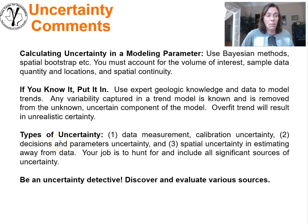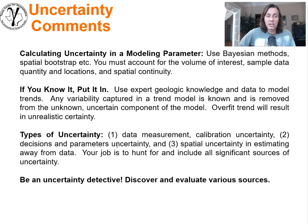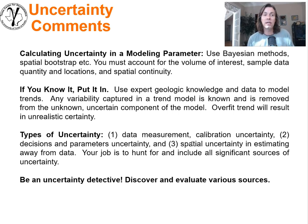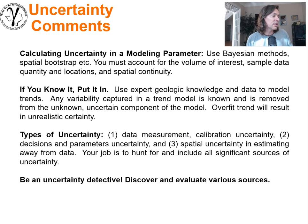Types of uncertainty — just a review. Data measurement and calibration uncertainty: the measures themselves. The decisions and parameters in the model are also uncertain. Spatial uncertainty: even if we know the data, the decisions, and the parameters, we still don't know what's going on between the well locations. It's our job to be an uncertainty sleuth — a detective — to find meaningful, significant sources of uncertainty and make sure we address them. If they're important to the transfer function, they should be included in the model.